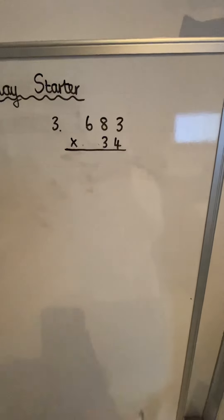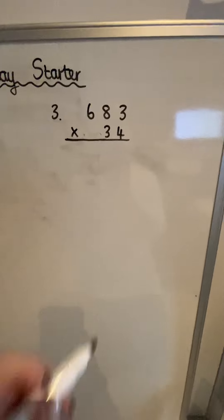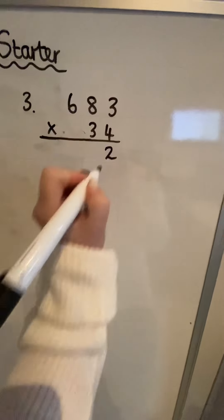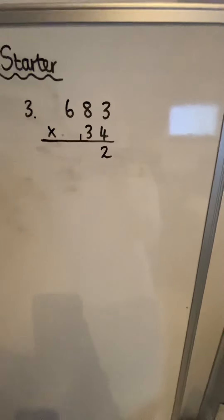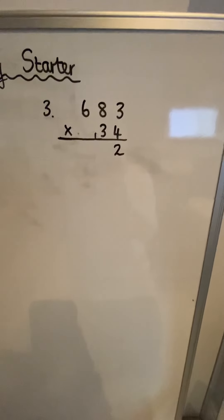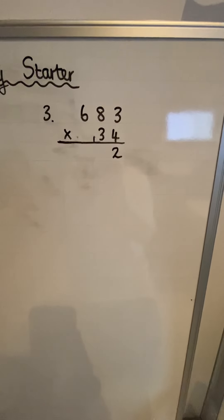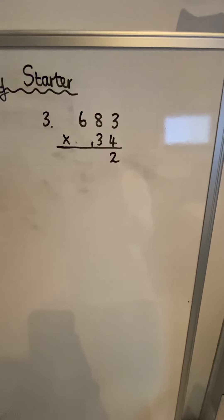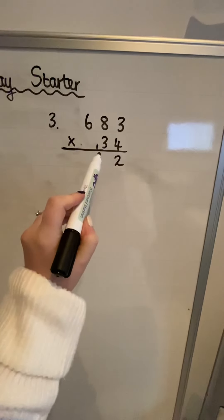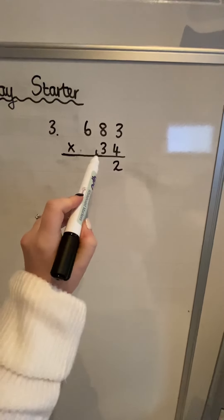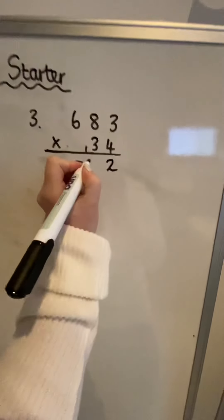We begin by doing four times three, which gives me 12, so I'm going to put my two in the ones column and carry the one. Now I'm going to do four times eight — remember that's four times eight tens, which would give me 32, or 320. But I've still got that carried one to add on, so it gives me 33.